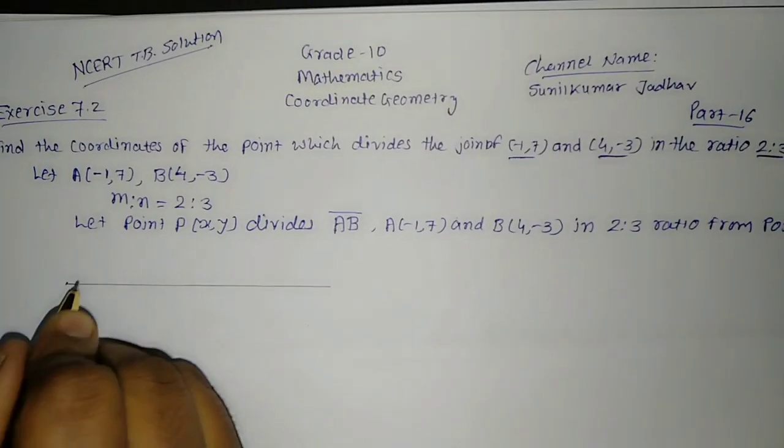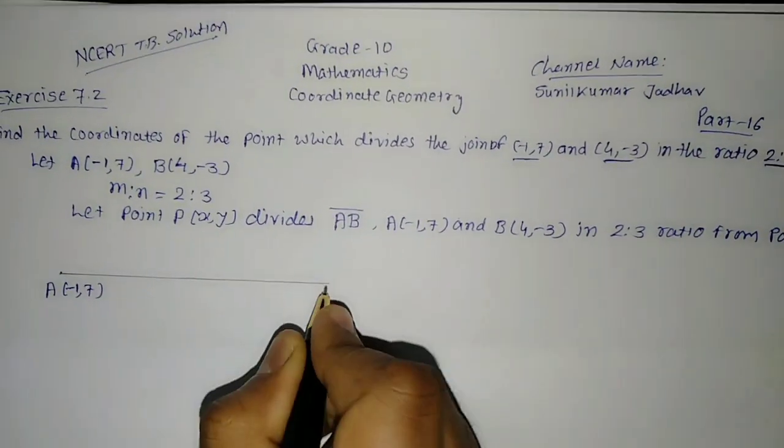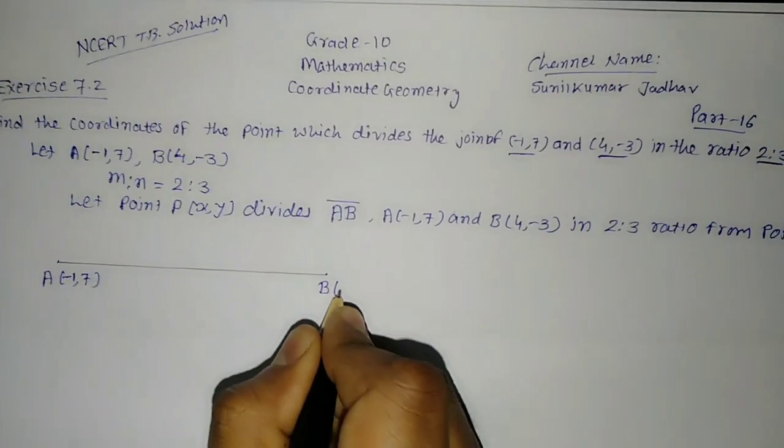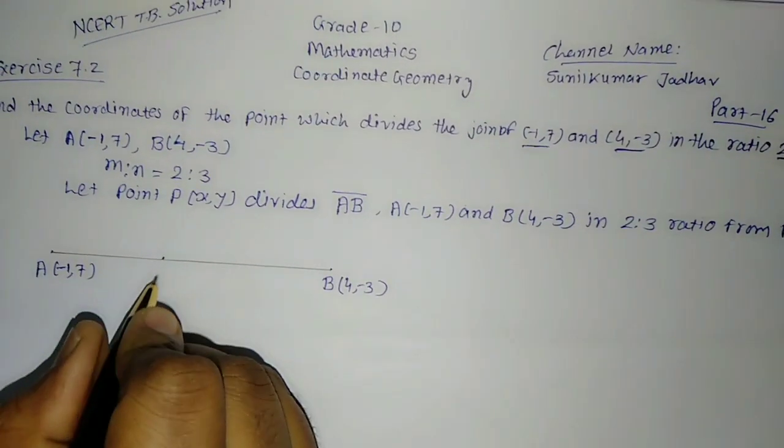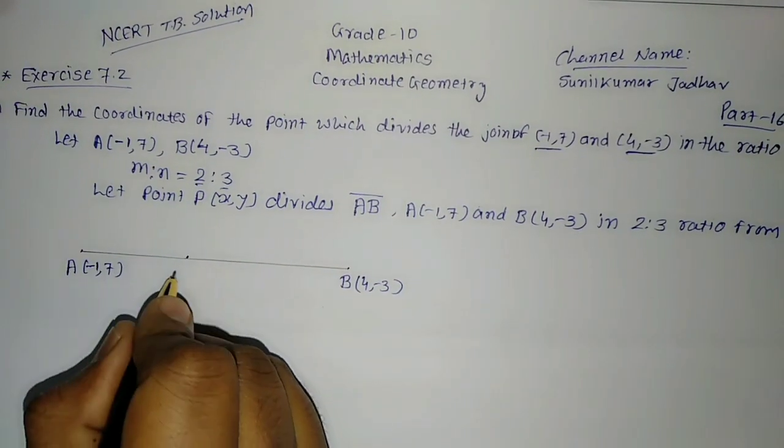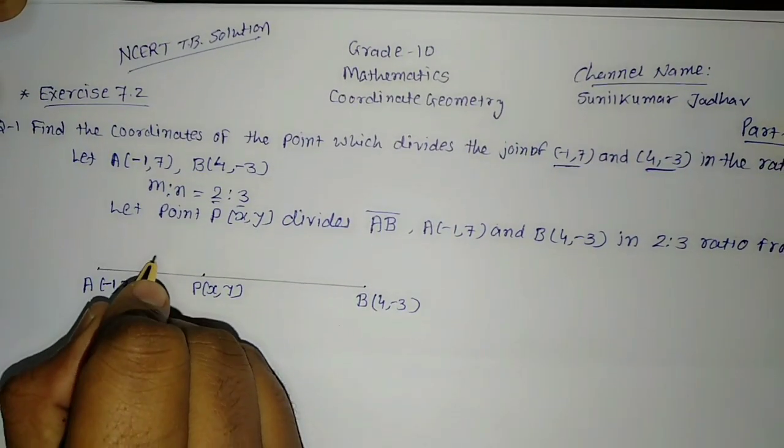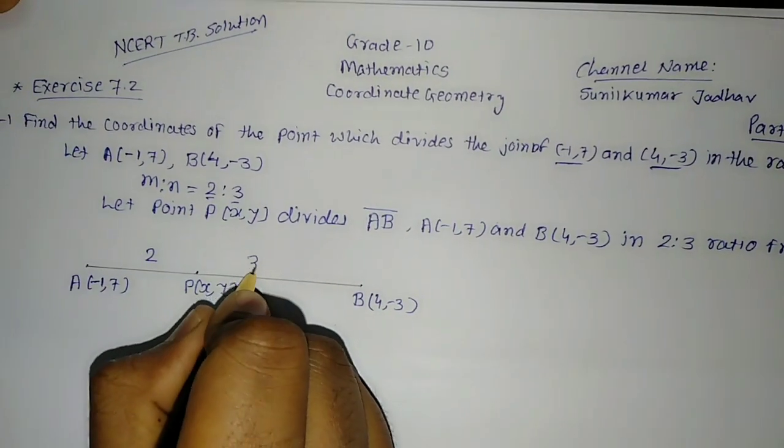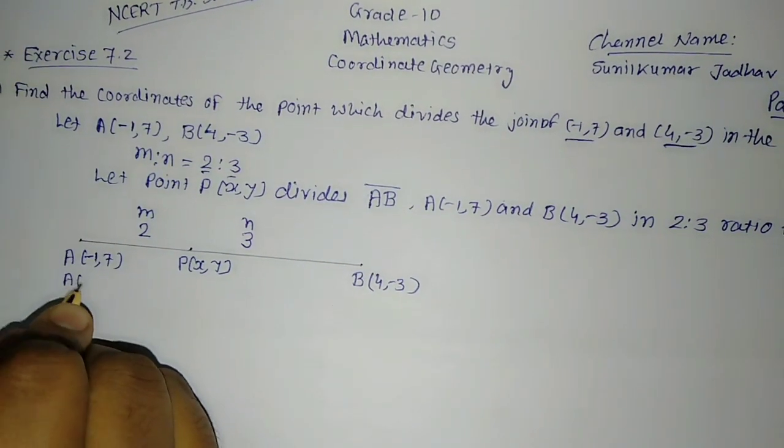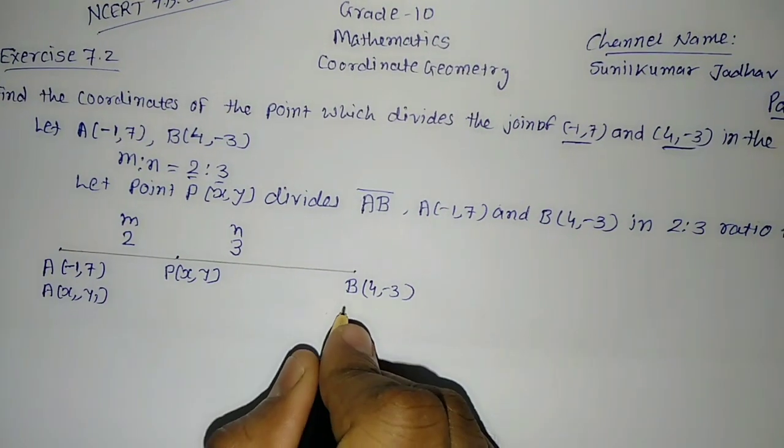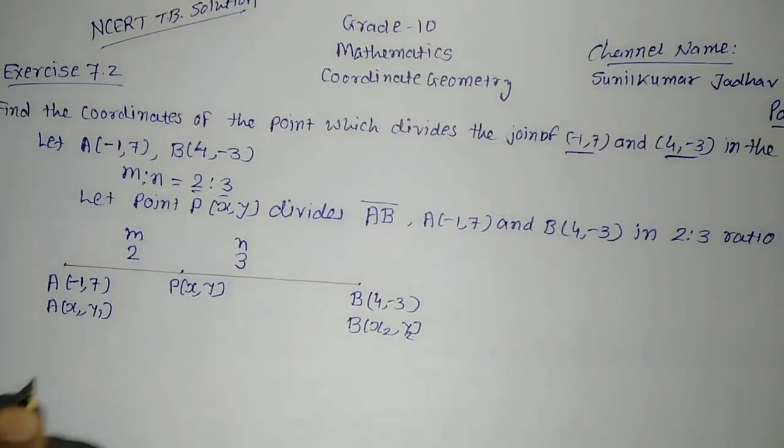Now we will assume: let point P(X, Y) divides line segment AB, that is containing A(-1, 7) and B(4, -3), in 2:3 ratio from point A side. This point P divides in ratio 2:3. This is M, this is N. We will compare with X1, Y1 and X2, Y2. We will use the section formula.